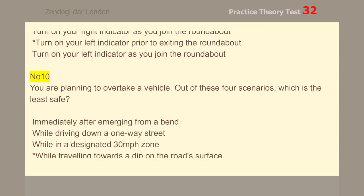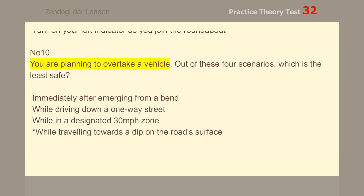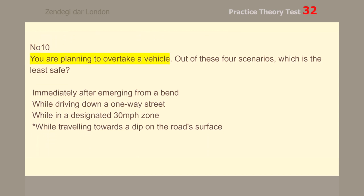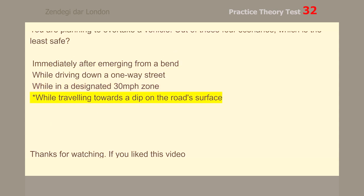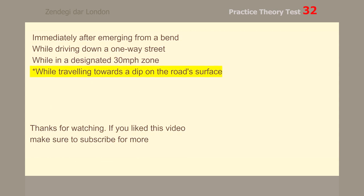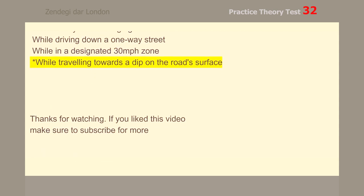Number 10. You are planning to overtake a vehicle. Out of these 4 scenarios, which is the least safe? While traveling towards a dip on the road's surface.